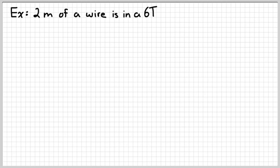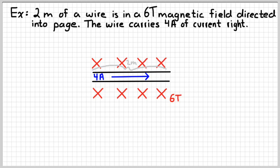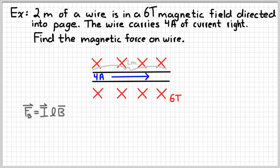So a real simple example. Let's suppose that we have two meters of wire, which is a pretty long length of wire, and a six tesla magnetic field directed into the page, which is a really big magnetic field. And it carries four amperes of current directed to the right. And what we want to figure out here is what is the magnetic force on the wire. And so using our brand new shiny equation, all we have to do here really is substitute. So current times length times magnetic field.